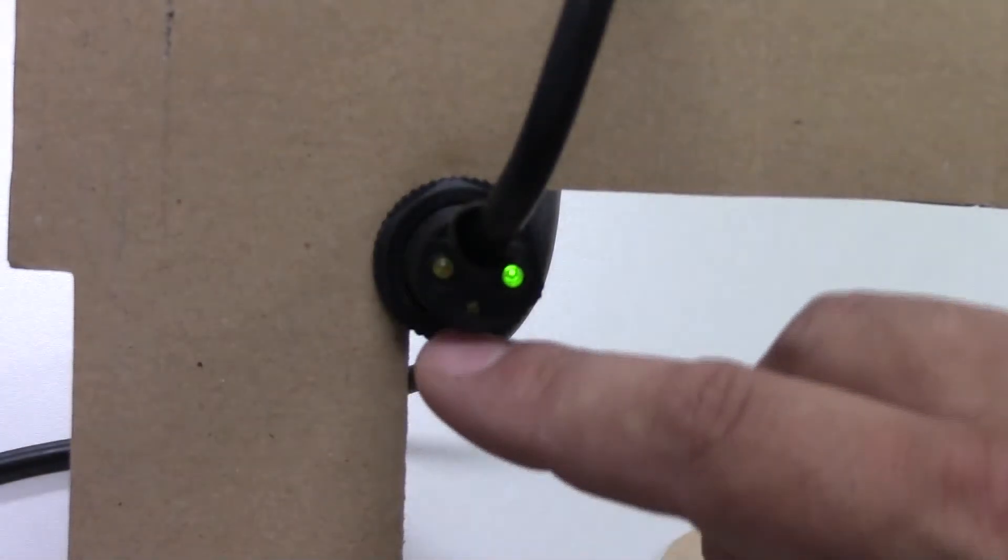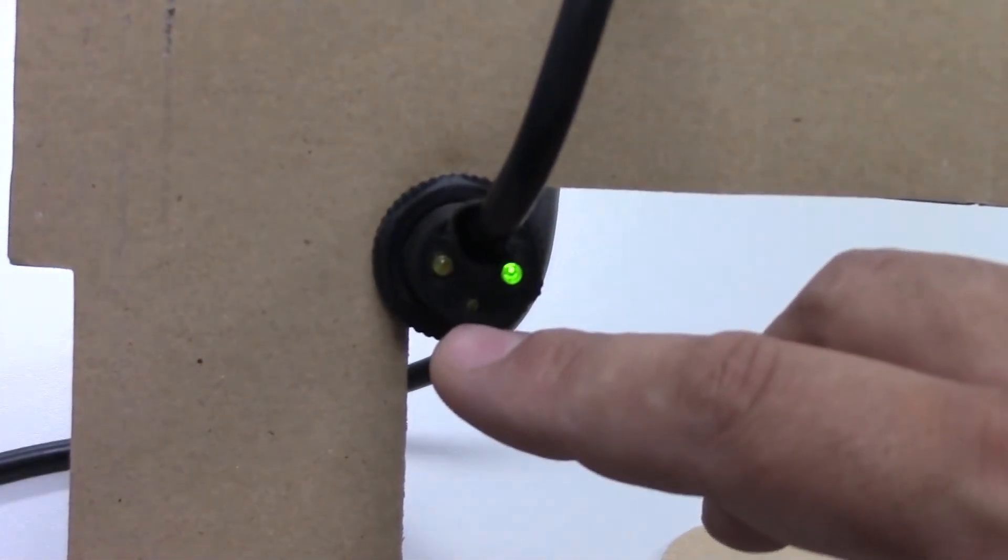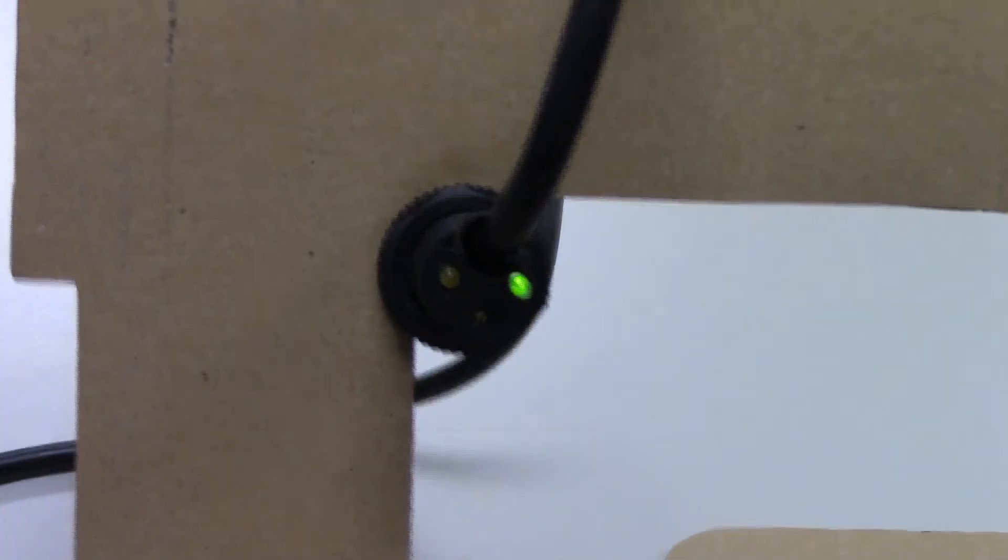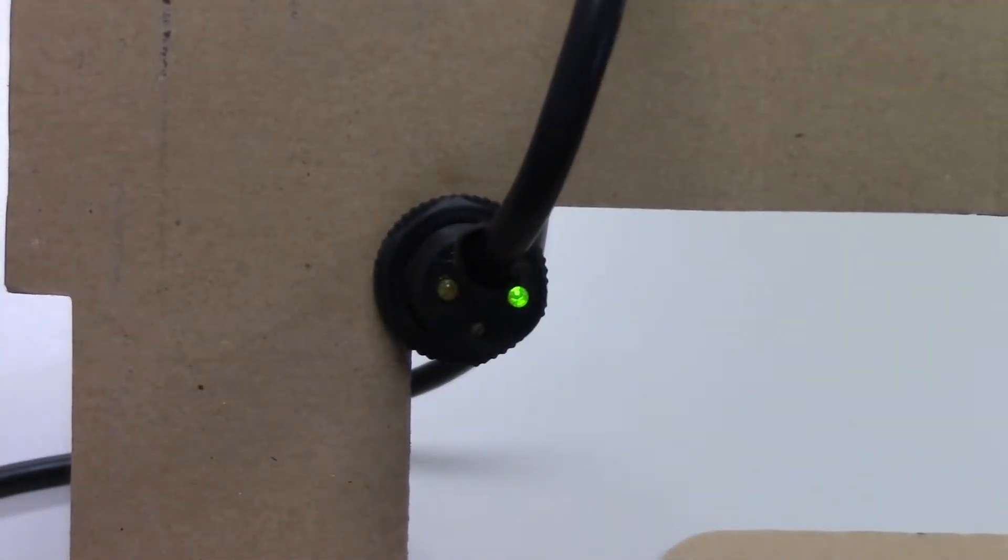Down below the two lights we have the adjustment screw. It's just a little flat head screw that we adjust to adjust the sensitivity of the sensor. We will adjust it clockwise to make it more sensitive and counterclockwise to make it less sensitive.